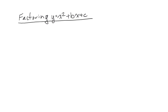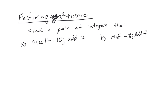Today we're going to study factoring basic equations of the form x squared plus bx plus c. The key concept is we need to find two numbers that will multiply to a certain number and add to a certain number. So let's take a look: we're multiplying to 10 and adding to 7.